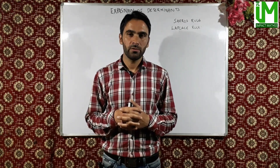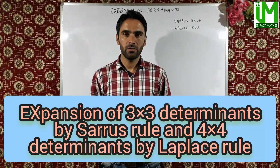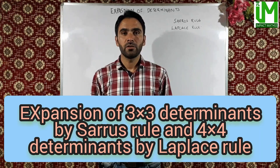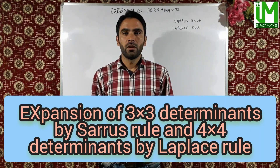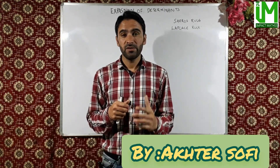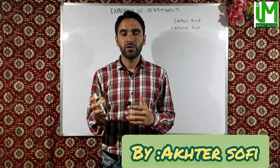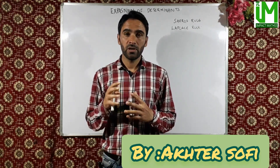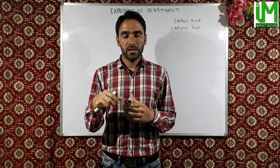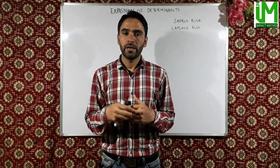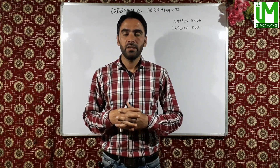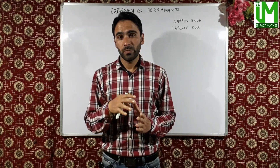Today in this video we will look at the expansion of 3x3 determinants by Sarrus' rule and 4x4 determinants by Laplace rule. We know a determinant is a number, real or complex, associated with a square matrix. For a square matrix of order 2, the determinant is obtained as the difference of the principal diagonal elements and the secondary diagonal elements. For order 3, it is expanded along a single row or column using minors and cofactors.